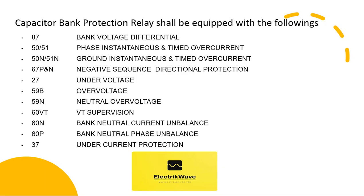27 under voltage; 59B over voltage; 59N neutral over voltage; 60VT VT supervision; 60N bank neutral current unbalance; 60P bank neutral phase unbalance; 37 under current protection.